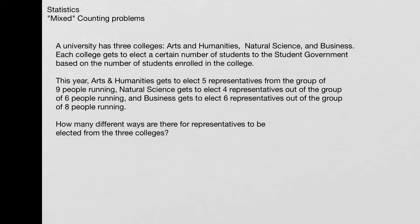In this problem we're told that a university has three colleges: arts and humanities, natural science, and business. Each college is getting to elect a certain number of students to the student government, and we want to figure out how many different ways there are for representatives to be elected from the three colleges.